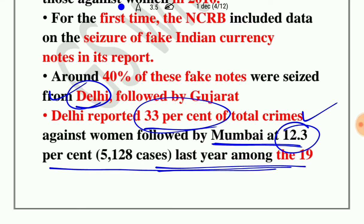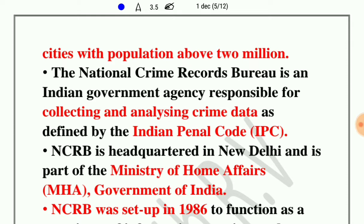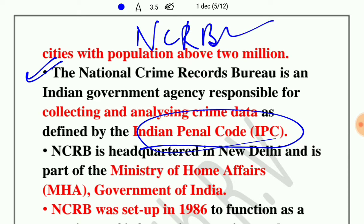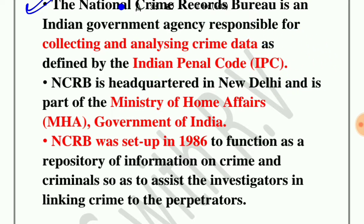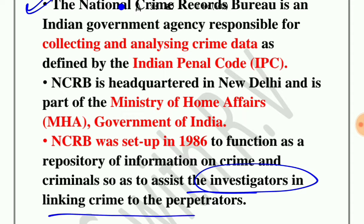NCRB gives the report of crime happening in cities. NCRB was set up in 1986 and is responsible for collecting and analyzing crime data defined under IPC — the Indian Penal Code. Its headquarters is in New Delhi and it is part of the Ministry of Home Affairs, Government of India. It acts as a repository of information on crime and criminals, helping investigators in linking crimes to their perpetrators.